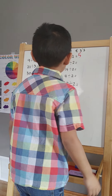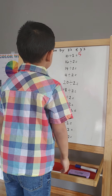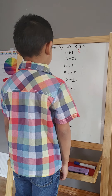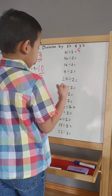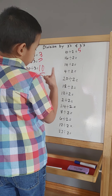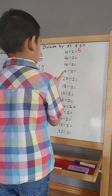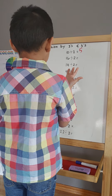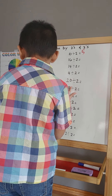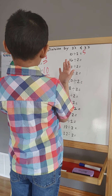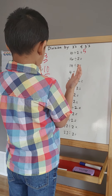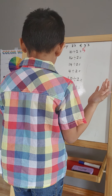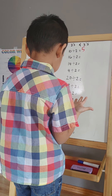Okay, 16 divided by 2. So 2, 4, 6, 8, 10, 12, 14, 16. 8.